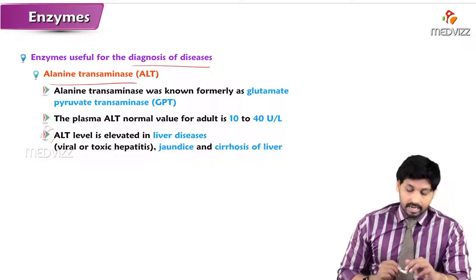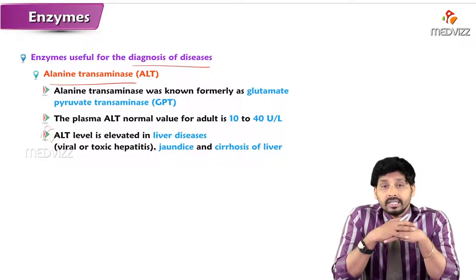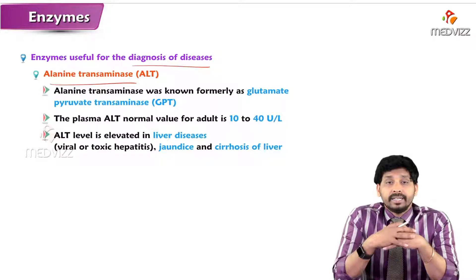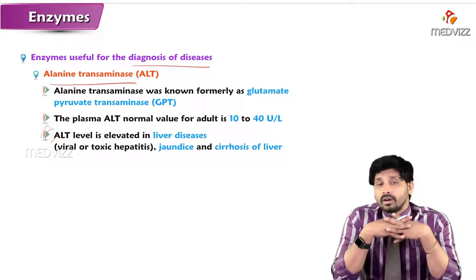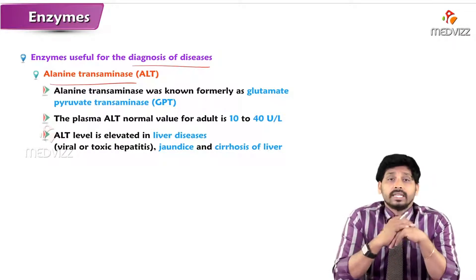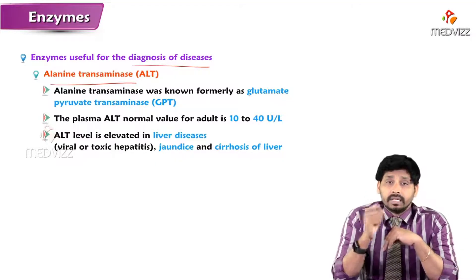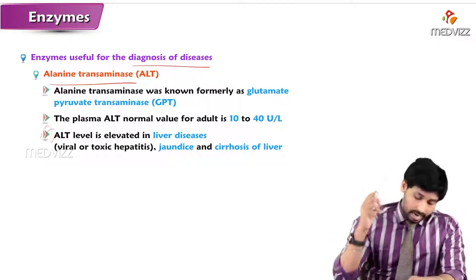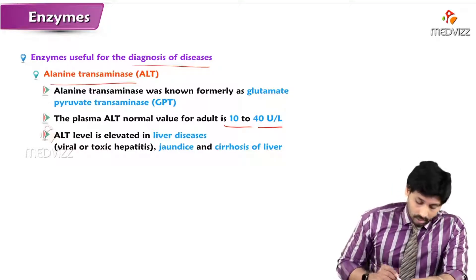Alanine transaminase, formerly known as glutamate pyruvate transaminase (GPT), is now referred to as ALT. It is one of the key enzymes assessed in a liver function test (LFT) or liver profile for checking the health of the liver. The normal plasma ALT value for an adult is 10 to 40 units per liter.